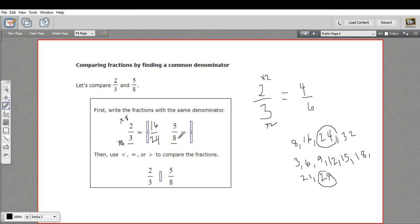Let's do the same thing here. Eight, to get that to be twenty-four, I need to multiply by three. So five times three is fifteen, and eight times three is twenty-four.